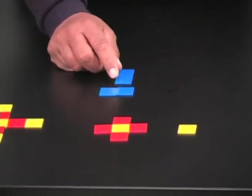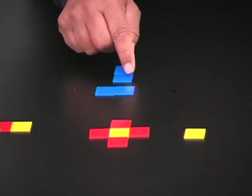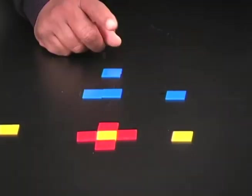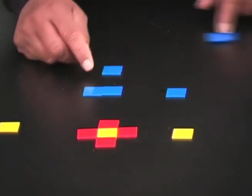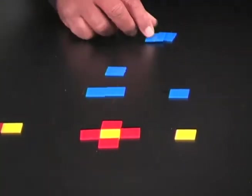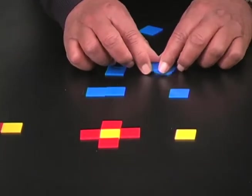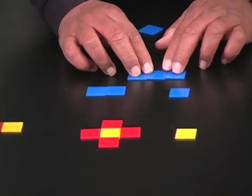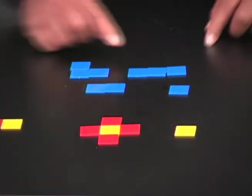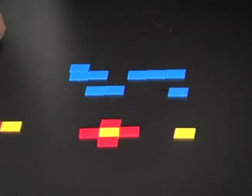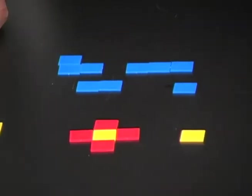This particular configuration is called a domino. So with one square, I can come up with one arrangement. Two squares, just one arrangement. Let's now extend it. What if I were to give you three squares? How many different ways can I attach them? Clearly, one way would be this. But let's see if we can come up with another way. I guess I can do this. So with three squares, there are two different arrangements. I don't think I can get a third one. These are called trominoes.